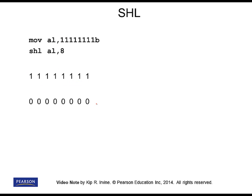Another interesting thing about shifting is that you can use it to zero out all the bits in a number. Suppose we start with all binary ones and then shift it eight times — we're going to end up with all binary zeros, because every single bit position is renewed with a zero coming in from the right-hand side, and none of the original bits remain, except the very last bit to be shifted, which goes into the carry flag.